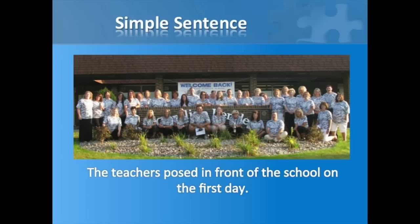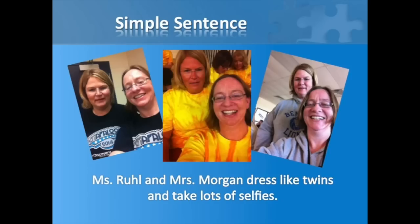Let's take a look at an example of a sentence that has compound subjects and predicates but is still a simple sentence. We still have just one complete thought being communicated. However, we have a compound subject — Ms. Rule and Mrs. Morgan — and this sentence also has a compound predicate. Our compound subject performs both of the actions in the predicate. Since only one complete thought is being expressed, this sentence is still a simple sentence.